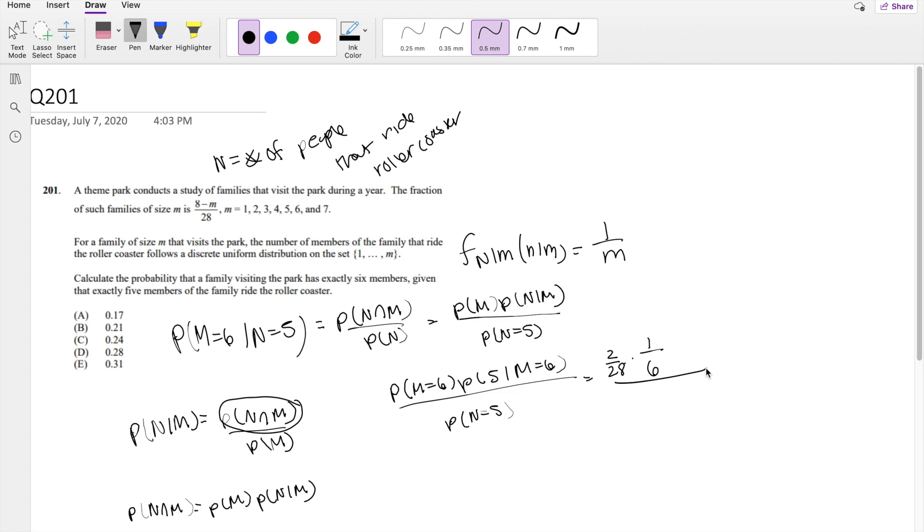So what is the probability that m is equal to 6? It's going to be 8 minus 6 which is 2 over 28, so we just have to plug in m is equal to 6 to this formula right here because this is exactly what we're looking for. This is 1 over 6. Divided by what is the probability that n is equal to 5?